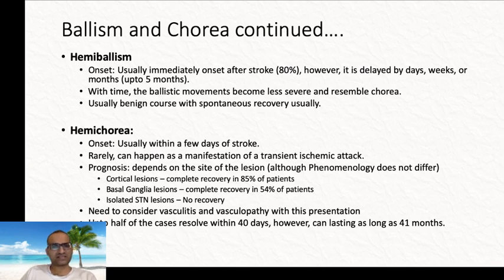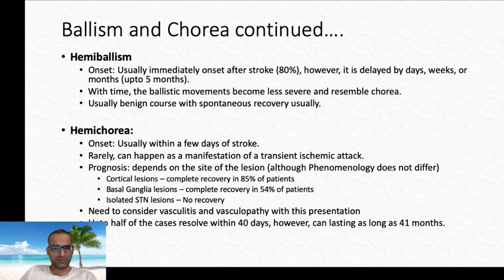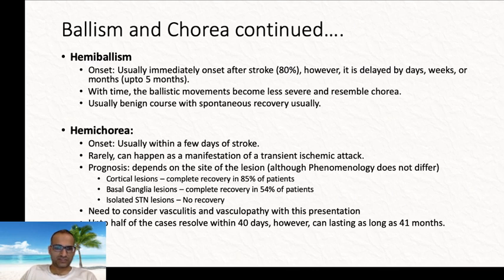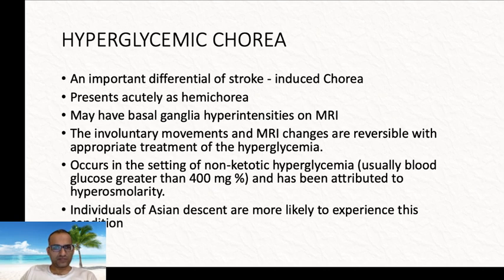Hemicorea has a slightly delayed onset within a few days. Interestingly, it can also manifest as a presentation of transient ischemic attack. Prognosis depends on the location of the lesion — cortical lesions are more likely to resolve. Basal ganglia lesions, about 50% will resolve, while isolated subthalamic nucleus lesions do not recover. Importantly, if someone presents with hemicorea, you have to think about vasculitis and other vasculopathies, as these are potentially treatable conditions with different management.